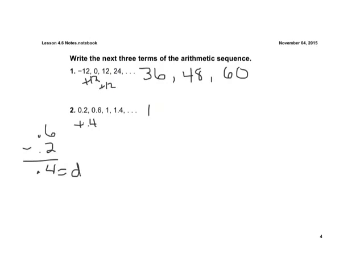So after 1.4, we get up to 1.8. If we add 0.4 again, we're going to get up to 2.2. If we add 0.4 again, we're going to get up to 2.6. Okay, those are our next three terms of each sequence. We're just increasing by that common difference.